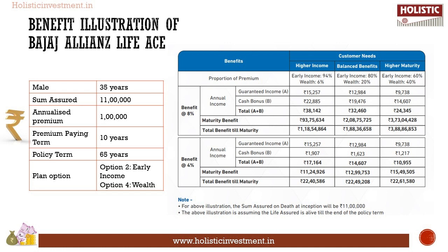Here we have discussed and analyzed three different combinations just to understand the cash flow patterns. A 35-year-old male buys Bajaj Allianz Life IS at an annual premium of Rs. 1 lakh; the sum assured is Rs. 11 lakhs; the premium paying term is 10 years; the policy term is 65 years; and the deferment period is 0 years, meaning income benefit starts immediately. In this illustration, the beneficiary has chosen Option Two — Early Income and Option Four — Wealth. The percentage of each option can be chosen according to the requirement. Those who need regular income can give a higher allocation to the early income option, and those who want the lump sum benefit can give higher allocation to the wealth option.